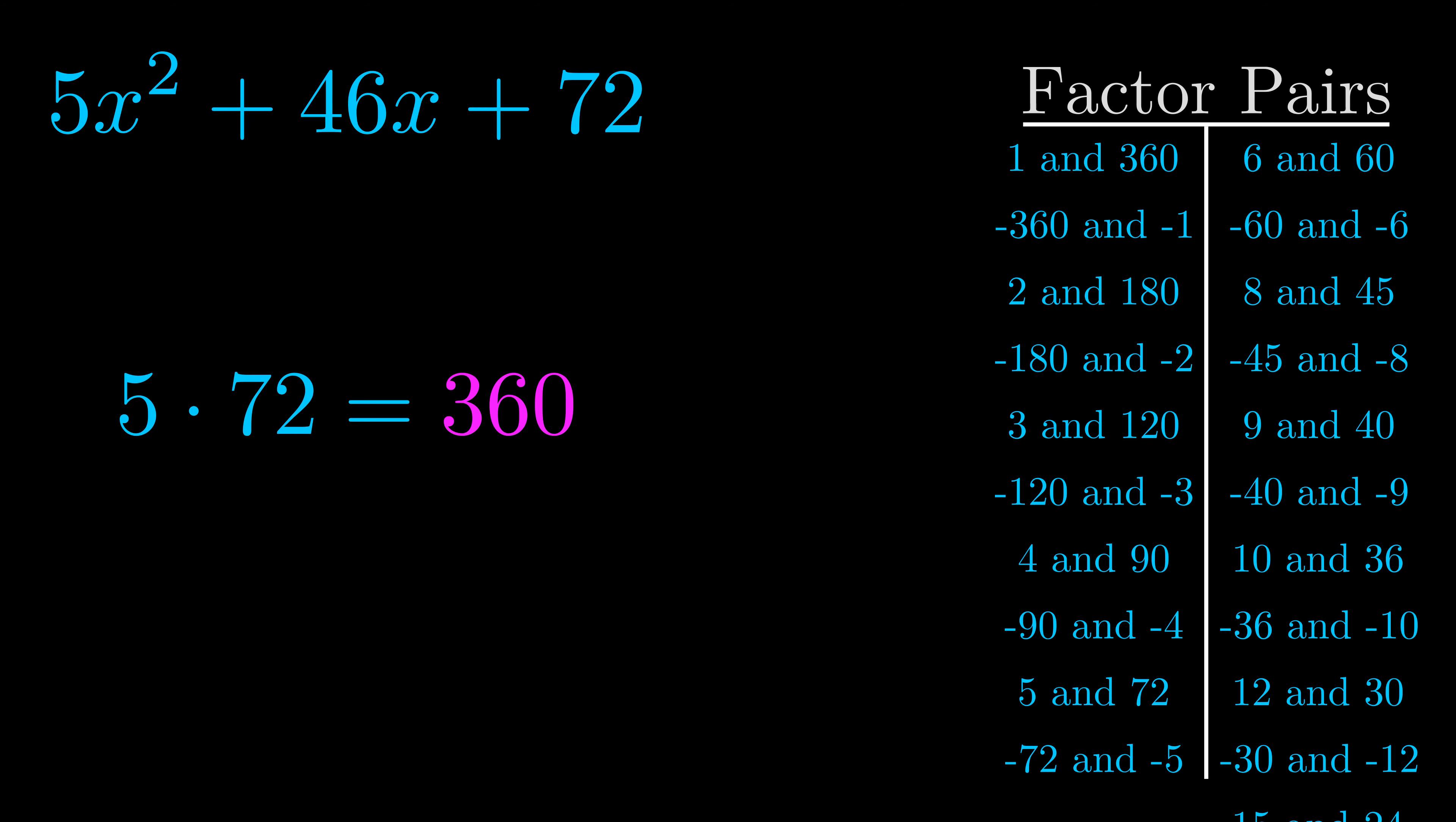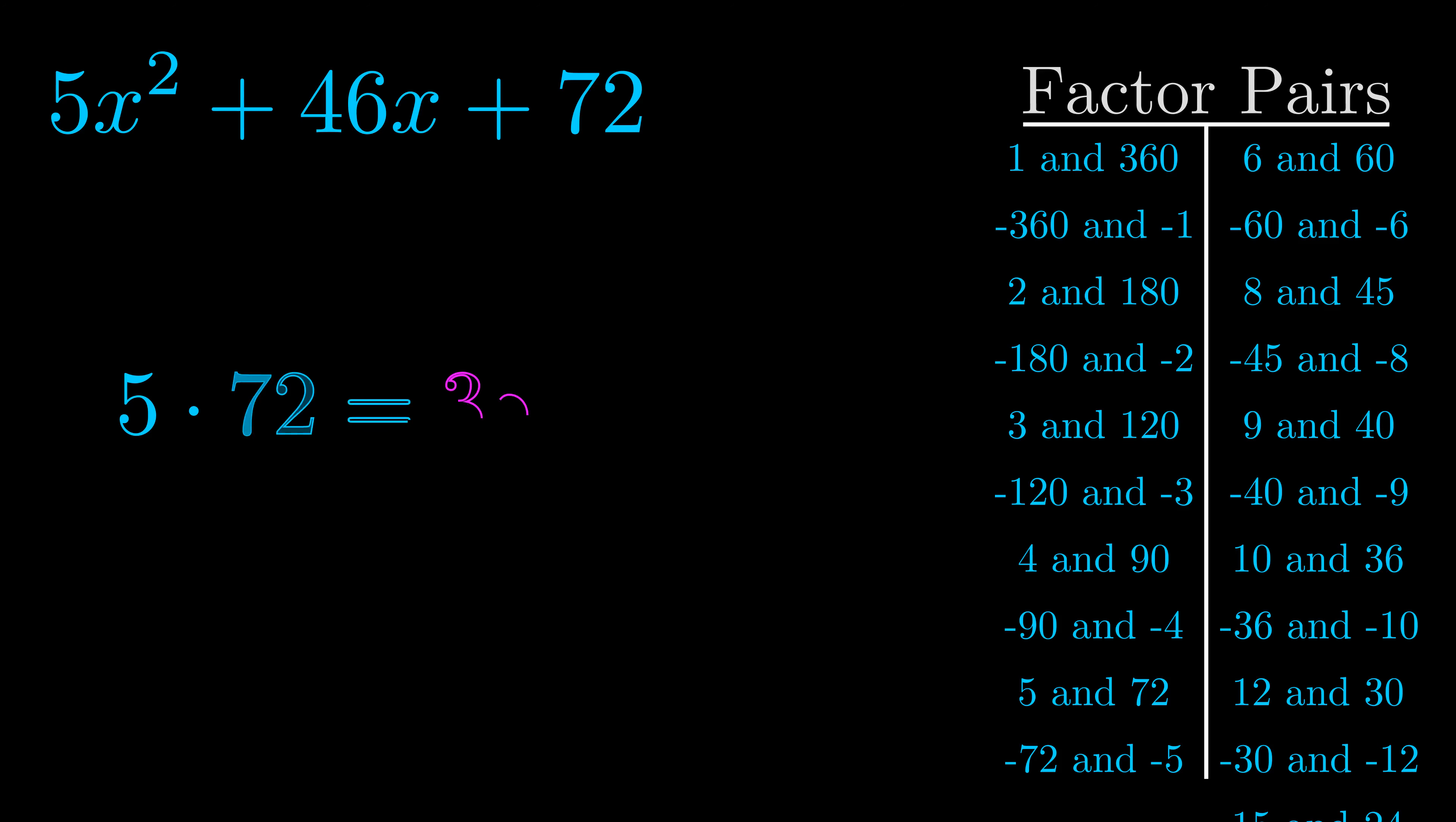Now once you have these factor pairs the goal is to find which of these pairs adds to the b value. The b value is the coefficient on the x term. That's the middle term, the one that we haven't done anything with yet. And really this is the only factor pair that we need.